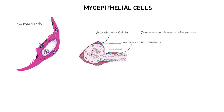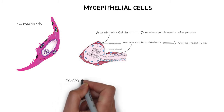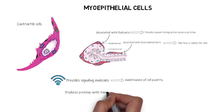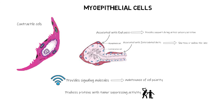Contraction of myoepithelial cells around the intercalated ducts shortens or widens the lumen of the ducts. Recent studies have also revealed that myoepithelial cells may have more important roles: they may provide signals for maintaining cell polarity and structural organization of the end pieces, and they are found to produce proteins that may have tumor-suppressing activity.